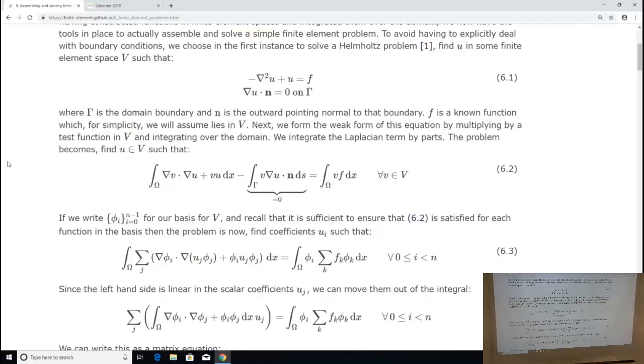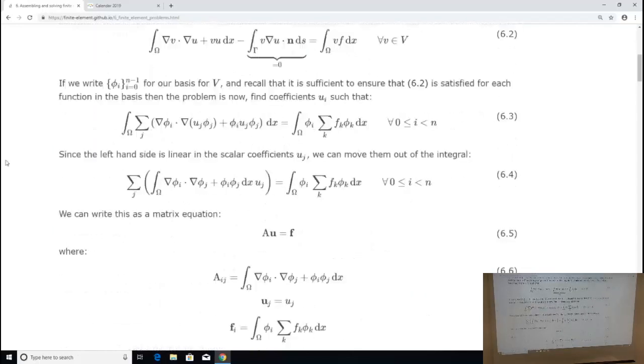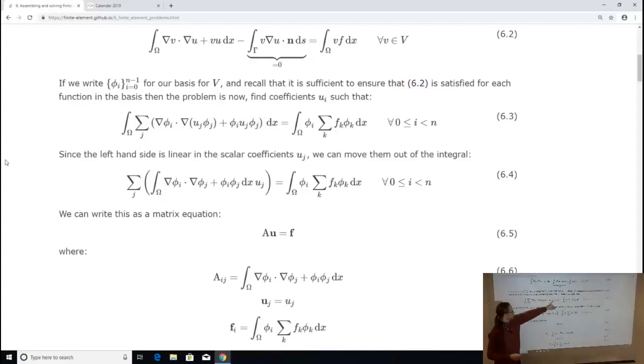So u is the easy one. We just take a basis for our finite element space and we observe that the function u is simply equal to uj phi j summed. So that's this. And every time this turns up, I substitute that in. The same thing is true for my forcing function f if I use a forcing function from a finite element space. So f is equal to fk phi k. Same story.